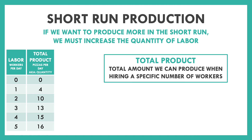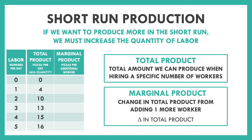Some of you are already doing the next step without realizing it — you're looking at how much more pizza we get every time we add another worker. We actually have a specific name for that: marginal product. With marginal product, we look at our total product and ask, every single time we add a worker, how much more pizza do we get? Marginal just means additional or the next one, so for every next worker we add, how much pizza do we get out of it?